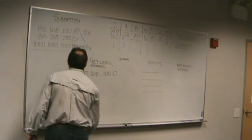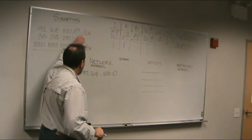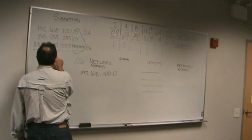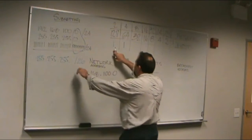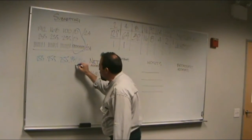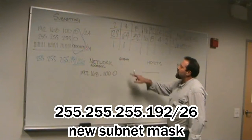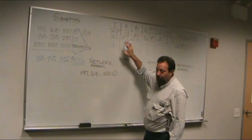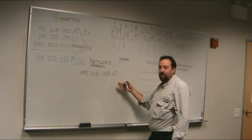Slash 26. We have borrowed two bits from the host portion, so we're going to have 255.255.255.128 plus 64, which is 192. That equals a slash 26. This is the new subnet mask we're going to use for all of our networks. Since I know that I am using 64, I put the 1 underneath that — and that number, 64, is what we call the increment. Every new network is going to start with 64.